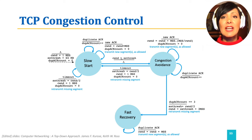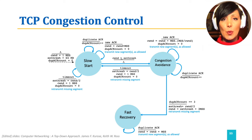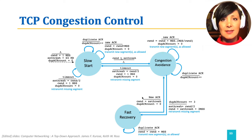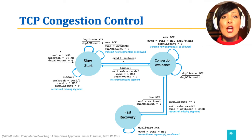Fast recovery is the state employed by some TCP implementations like TCP Reno. The arrival of a new ACK in the fast recovery state will result in going back to congestion avoidance, while setting the window size to the SS threshold value.